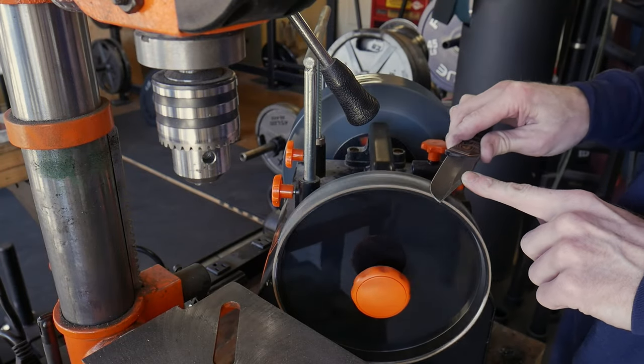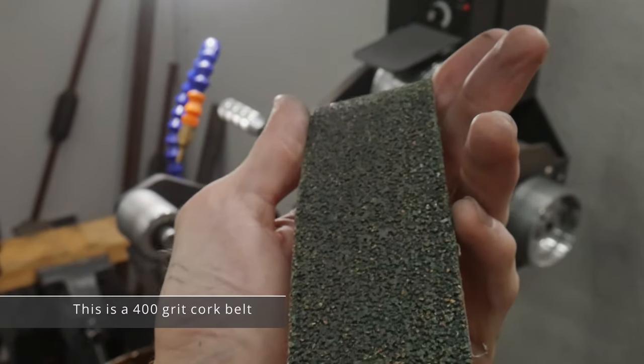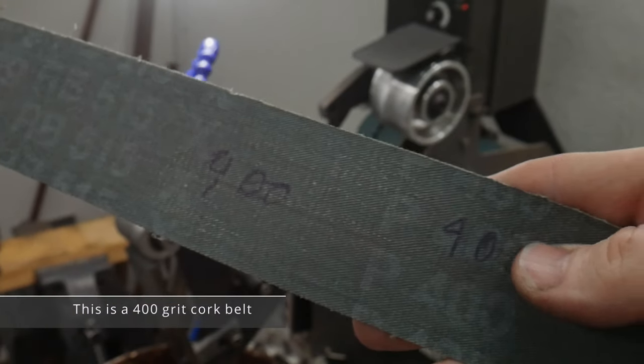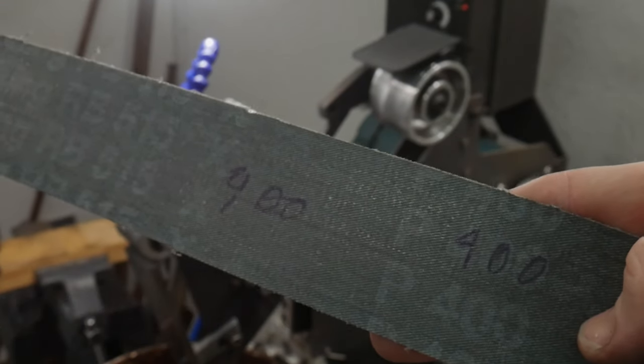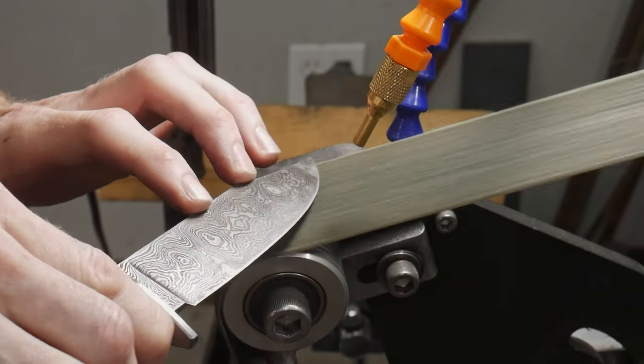Some examples would be a hand strop or a power strop like on the Winn or Tormek sharpening system. You could also purchase a leather belt for your 2x72 loaded with buff and compound and strop on the machine. Recently I stropped with a cork belt loaded with buff and compound and it worked fairly well.